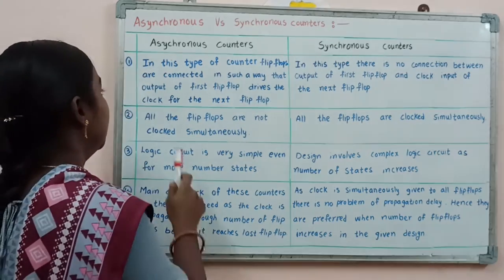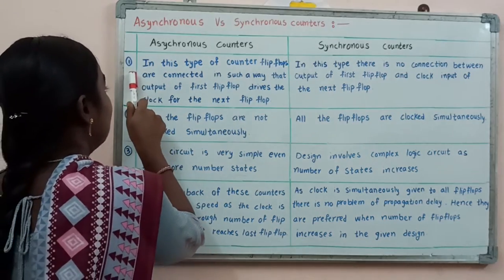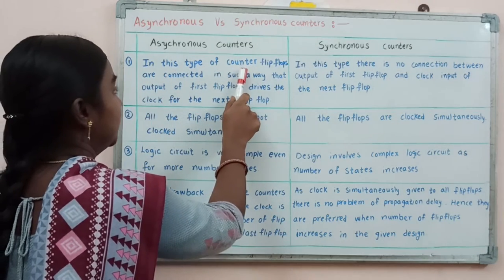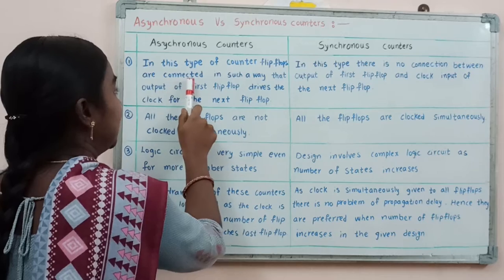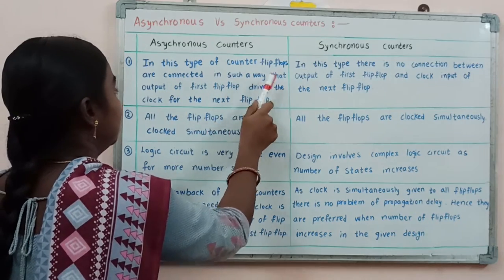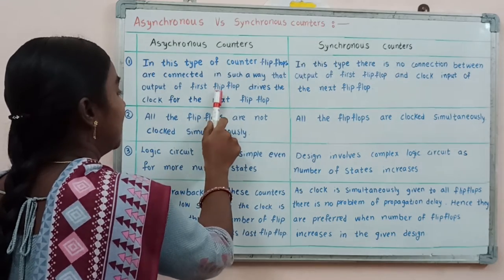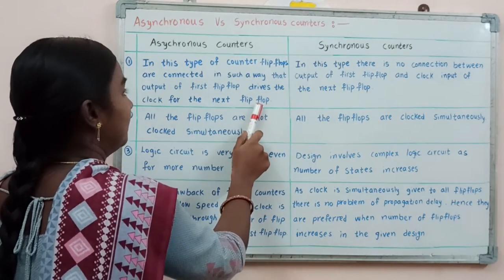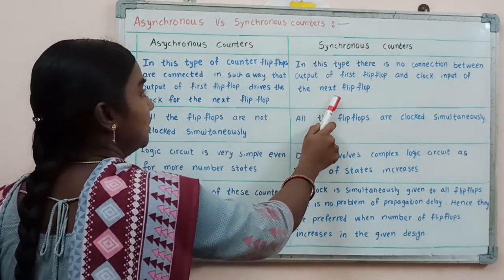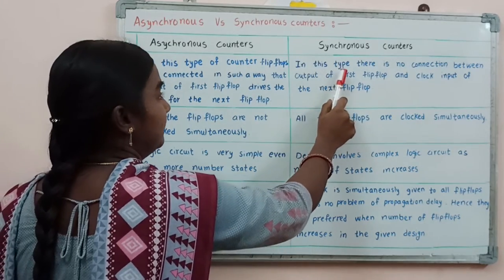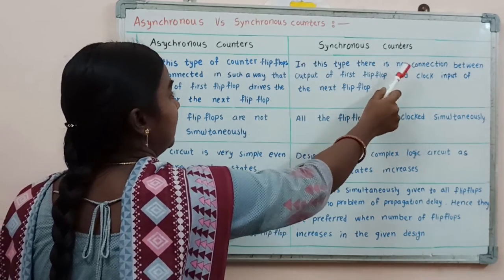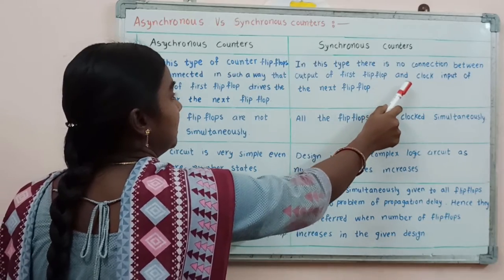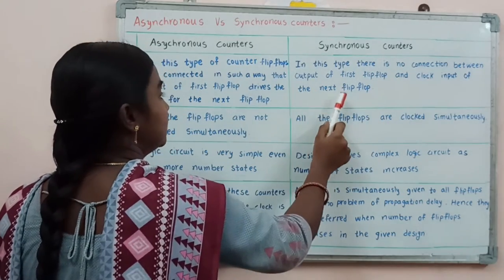Coming to the first point in this comparison: in Asynchronous Counters, flip-flops are connected in such a way that the output of the first flip-flop drives the clock for the next flip-flop. Coming to Synchronous Counters, in this type there is no connection between the output of the first flip-flop and the clock input of the next flip-flop.